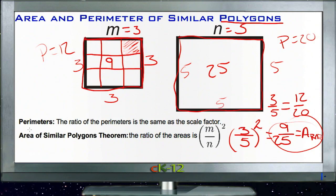And that's really it. So we're going to deal with the perimeters, the same as the scale ratio, and the area, which is the square of the scale ratio when we're talking about two different polygons.